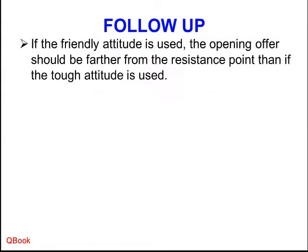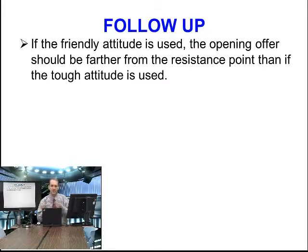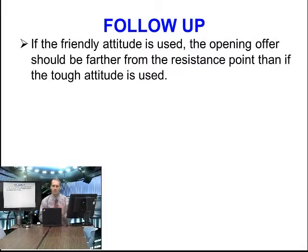Basically, there are two attitudes: friendly — 'I'm trying to help you' — and tough — 'I cannot give you anything more.' Friendly: 'I want us to win-win.' Tough: 'This is my bottom line.' When you negotiate, you mix these together, but you tend to prefer one. If you're going to be mostly friendly, then your opening offer needs to be further from the resistance point because you're going to have to give up more.